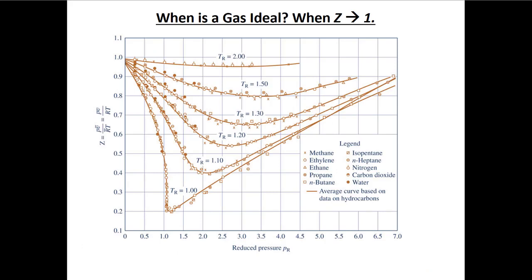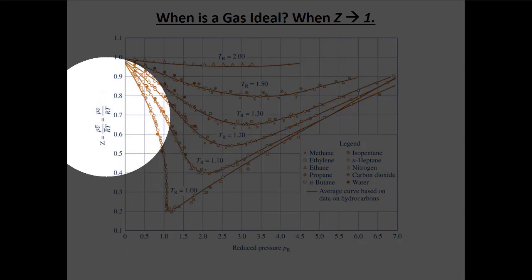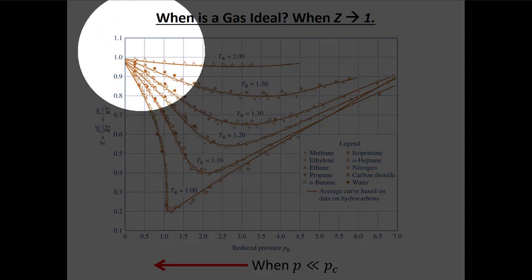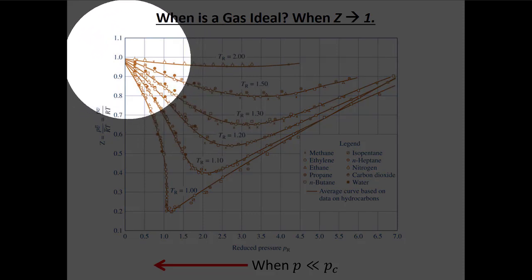I've told you that you can only use the ideal gas law when you have an ideal gas, and you have an ideal gas when the compressibility factor equals one — but what does that mean physically? How do I know if the compressibility factor equals one? Looking at the graphs, there are two times when we get a compressibility factor approximately equal to one.